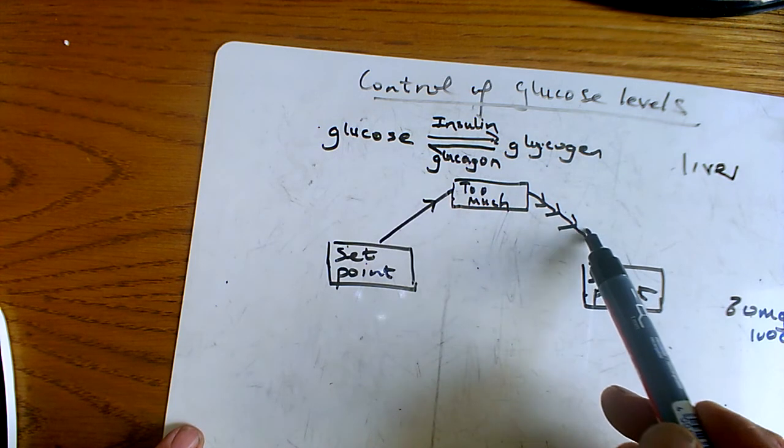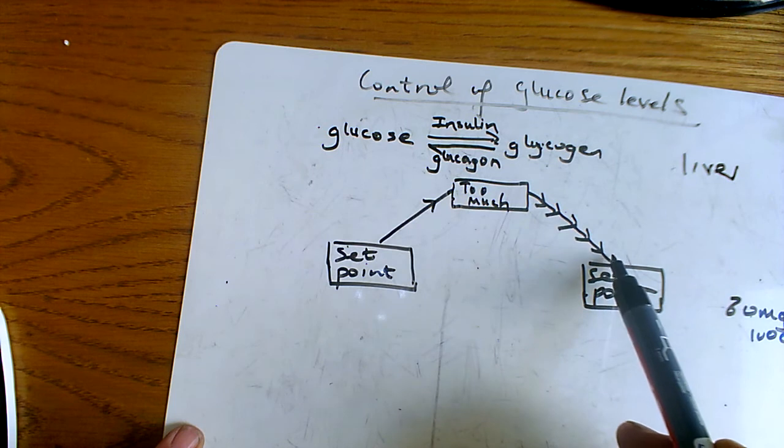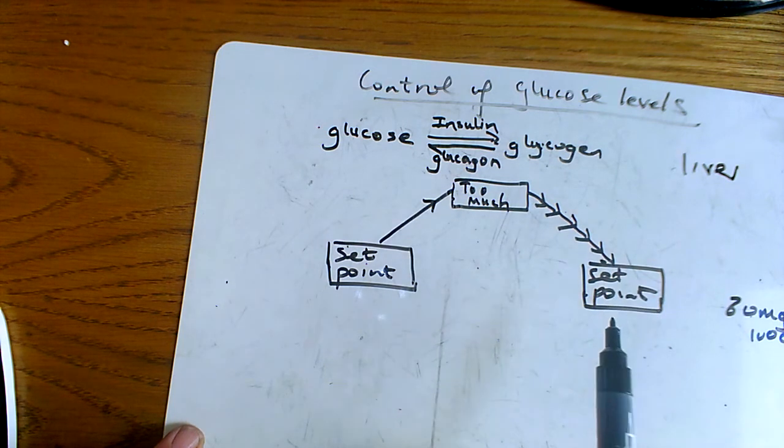Continues to fall until it gets back to the set point, at which point the production of insulin is switched off.